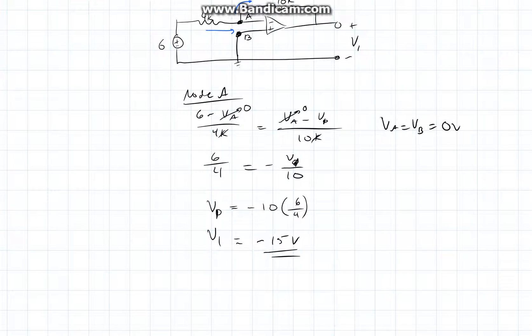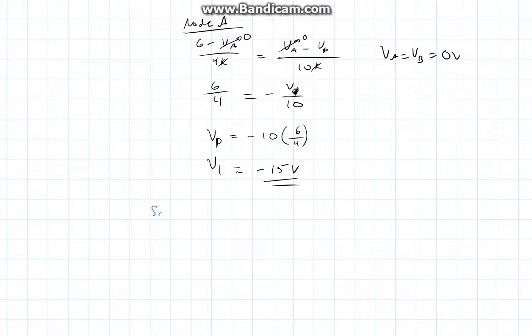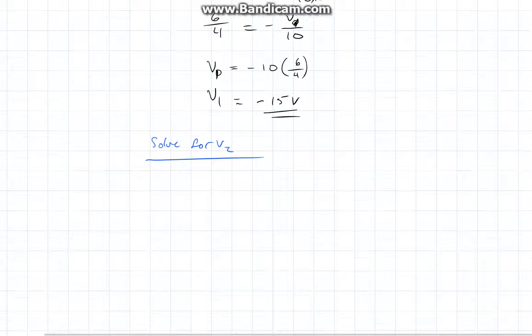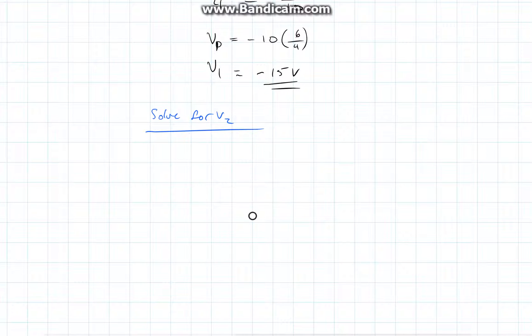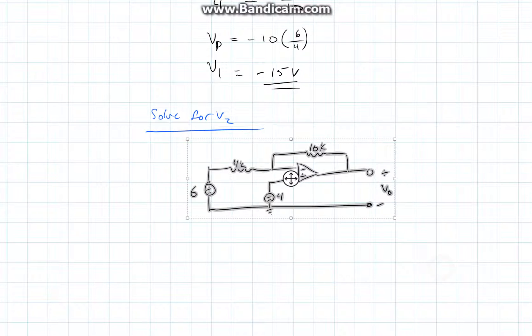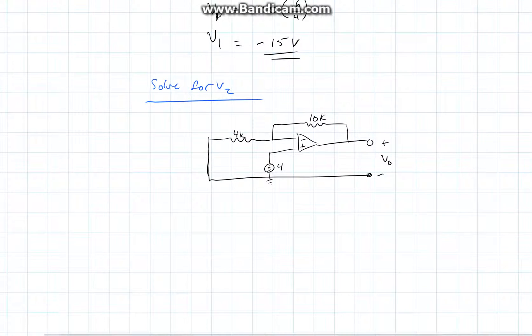Now doing the same method for V2, we will get the following circuit. We will apply a short circuit across the 6 volts. And then we will apply nodal analysis again. Or should I say KCL.